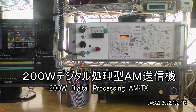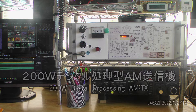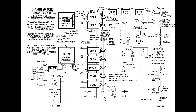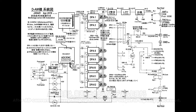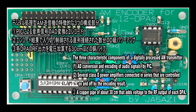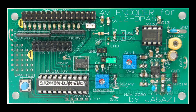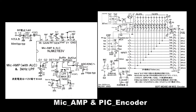The digital processing type AM transmitter has a completely different operating principle from the plate modulation and PWM methods. Let me explain the three characteristic components of a digital processing AM transmitter.